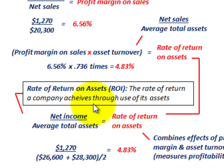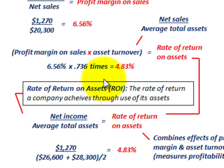That summarizes our three ratios: the asset turnover ratio, our profit margin on sales, and our rate of return on assets.